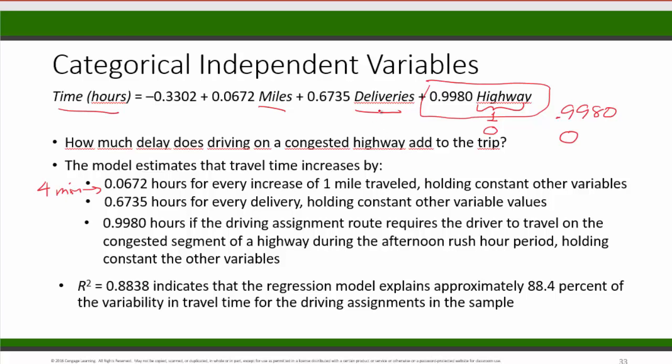And the coefficient for deliveries, 0.6735, means that the travel time will increase by 0.6735 hours for each additional delivery, holding constant the number of miles traveled and the highway variable. And 0.6735 is about 40 minutes.